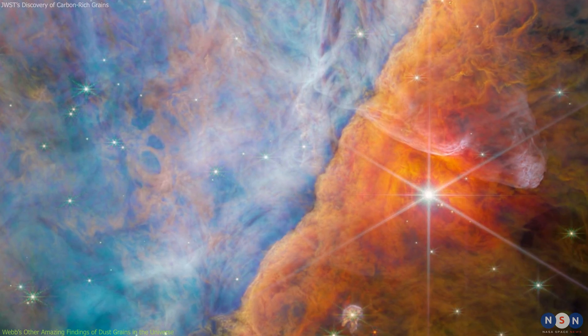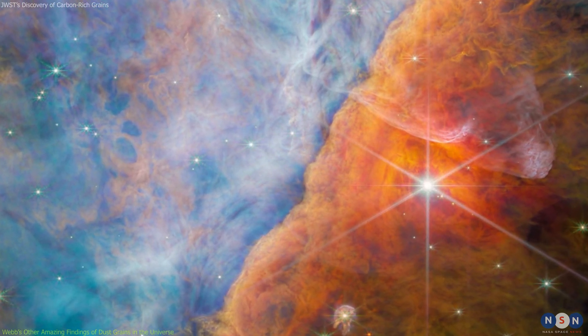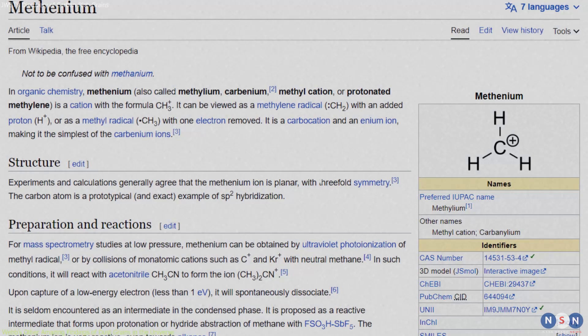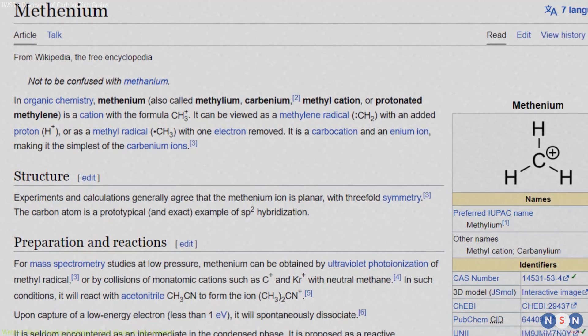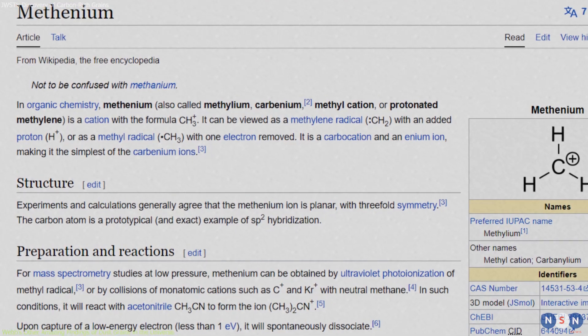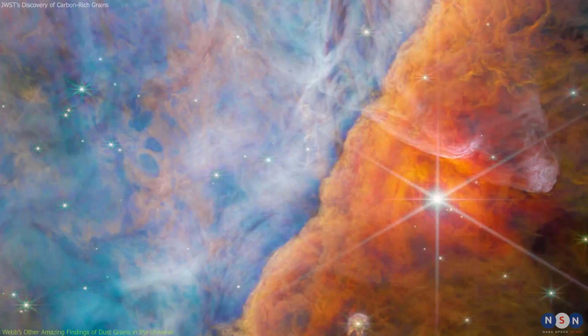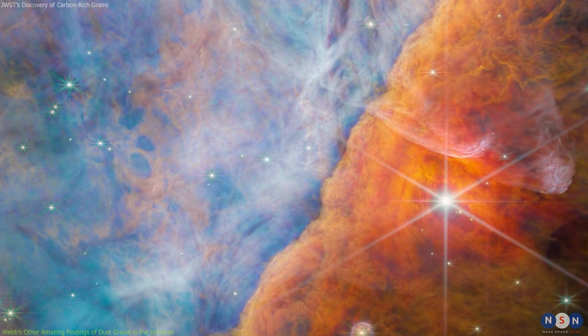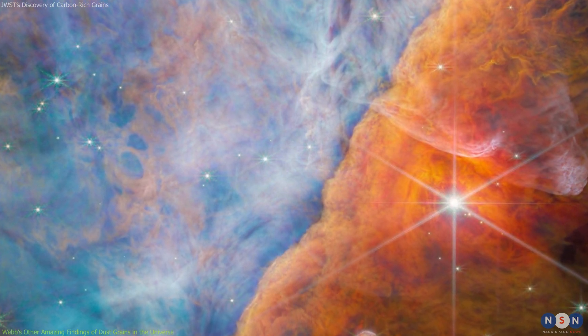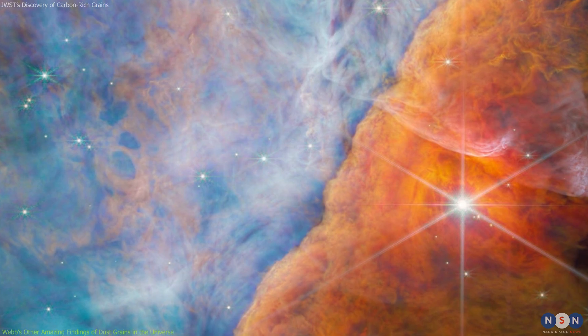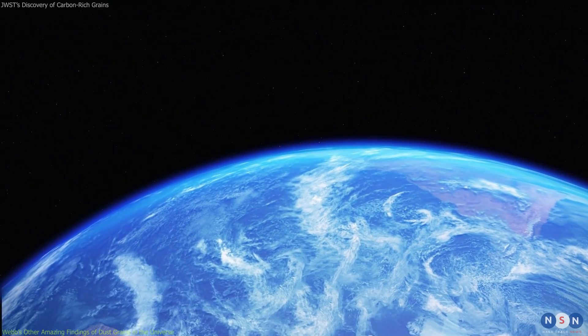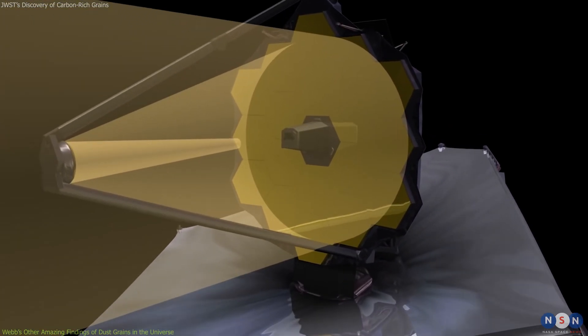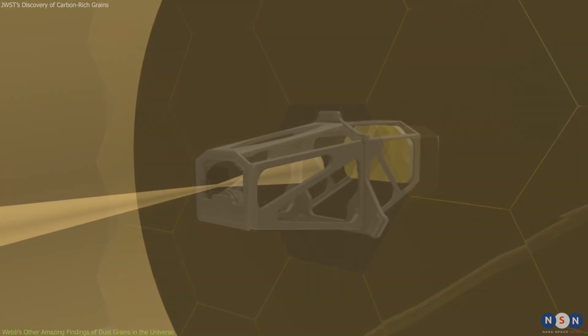The ingredient is called methyl cation, which is a simple organic molecule that consists of one carbon atom and three hydrogen atoms. Methyl cation is important because it can react with other molecules to form more complex organic compounds such as amino acids and sugars, which are essential for life as we know it.